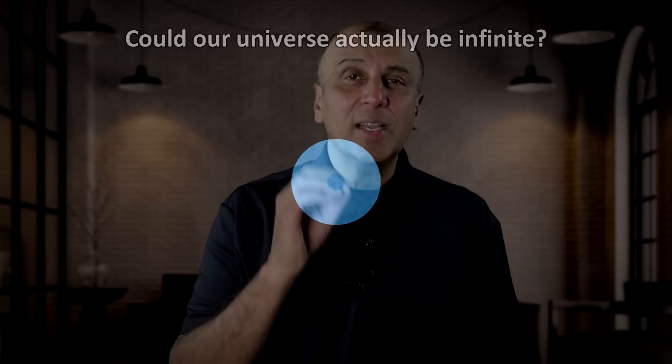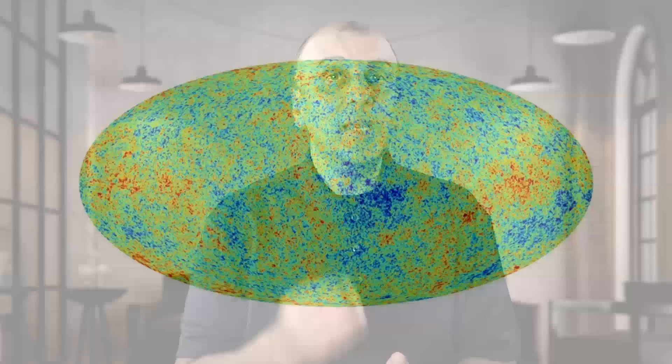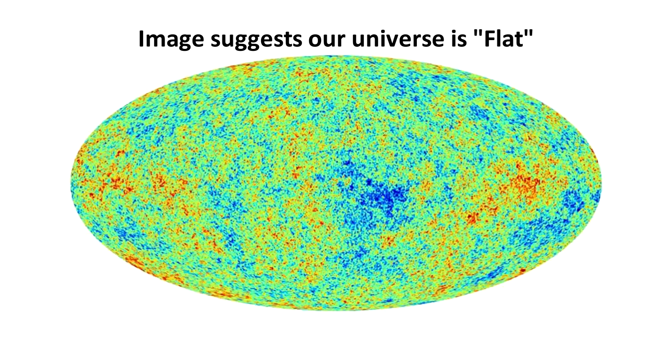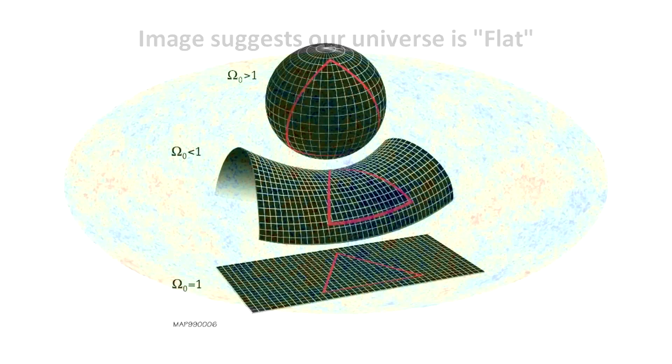Although it looks fairly uniform, there is a lot of information there. One of the things that this microwave background tells us, is that the universe appears to be flat. How do we know this? Scientists look for what we would see if the universe was a certain shape. They look for the curvature of space.